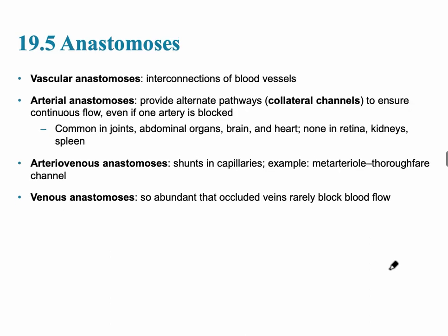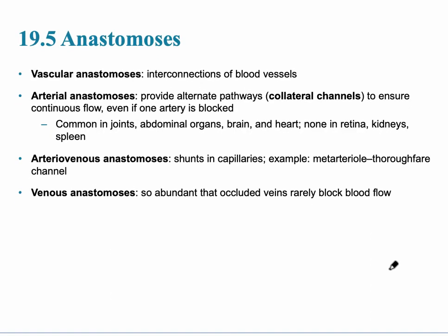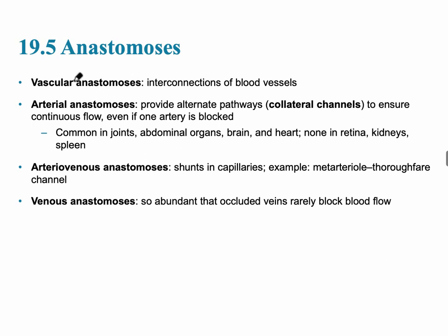Anastomoses are interconnections of blood vessels that often form automatically as needed, providing alternate pathways — collateral channels — to ensure continuous blood flow. A good example is when one coronary artery is blocked: an anastomosis forms to ensure blood continues reaching the myocardium.